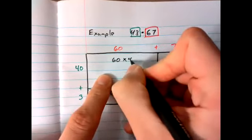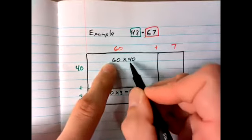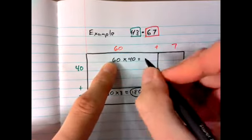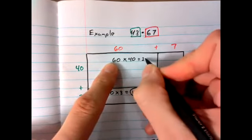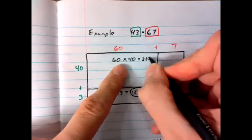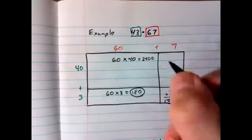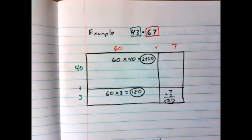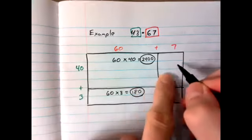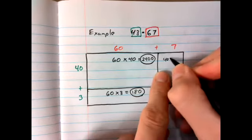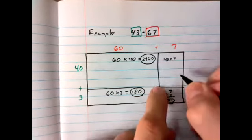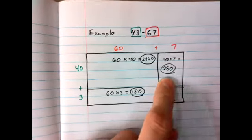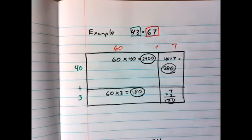60 times 40. Let's pull the digits out. 6 times 4. What do we get? 6 times 4 is 24. Two zeros behind it. That's our other partial product. It's the biggest partial product we have so far, 2,400. Let's do 40 and 7. So 40 times 7. 7 times 4 is 28 with a 0, so 280.